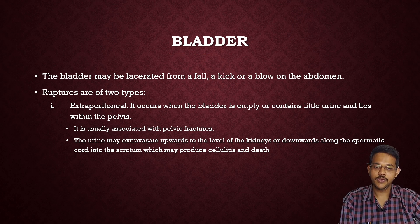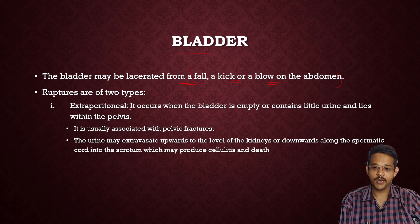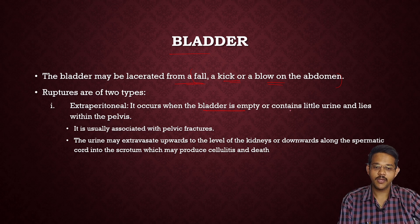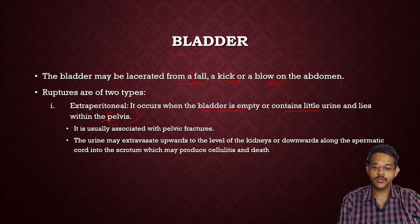The bladder may be ruptured by fall, kick, or blow on the abdomen. Rupture of the bladder occurs for two reasons: extraperitoneal rupture occurs when the bladder is empty or contains little urine and lies within the pelvis, where it is protected by the pelvis. It is usually associated with pelvic fractures, and urine may extravasate upwards to the level of the kidneys or downwards along the spermatic cord into the scrotum, which may produce cellulitis and death.